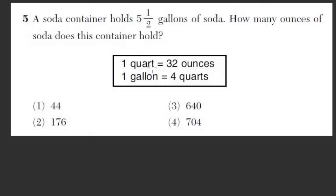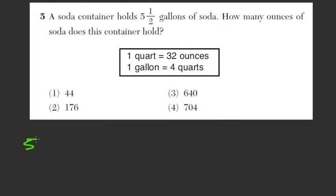The given information is 1 quart equals 32 ounces and 1 gallon equals 4 quarts. So the very shortest way and from where you have to begin is 5.5 gallons. So this is where we need to start.